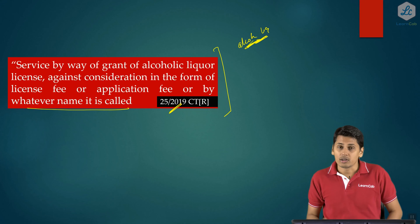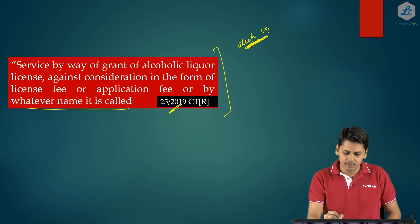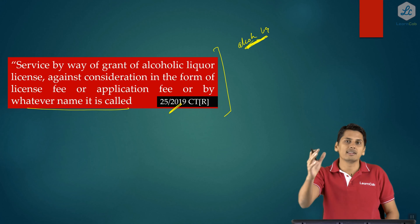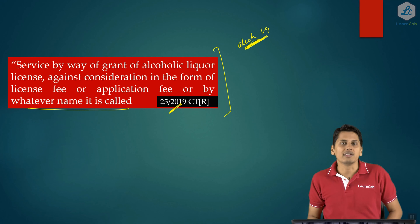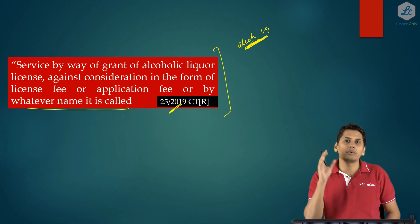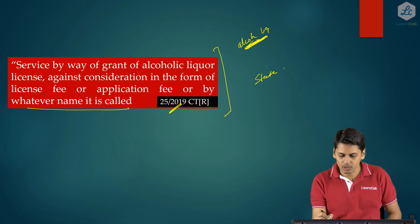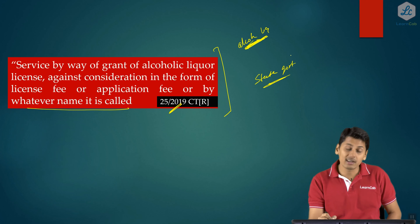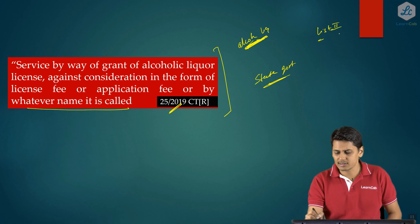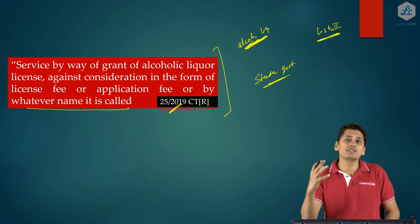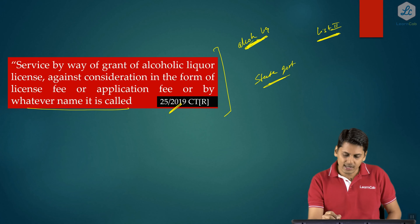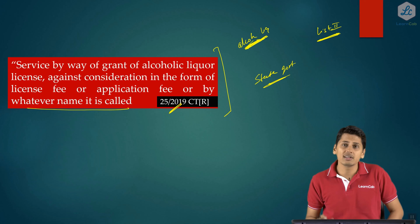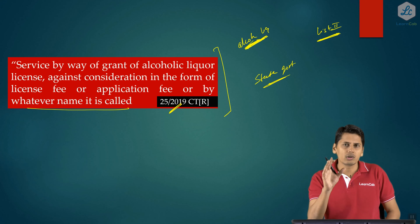Alcoholic liquor is a non-taxable supply and constitutionally it is outside GST. If you want to serve liquor, you need to obtain a license from the state government because liquor is a List 2 item — under Article 246, Schedule 7, List 2 of the Constitution, the State List contains alcoholic liquor. So you need a permission or license from the state government to serve liquor.